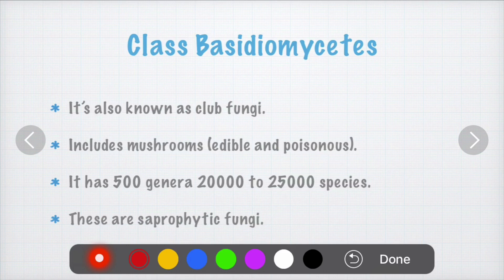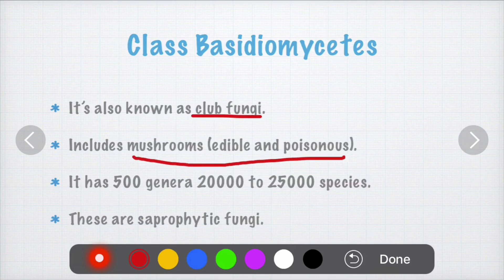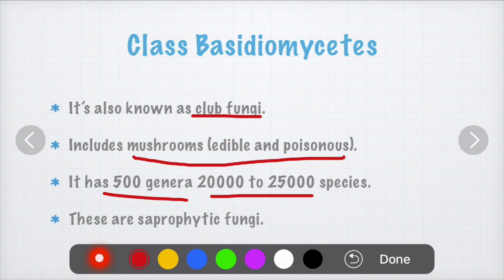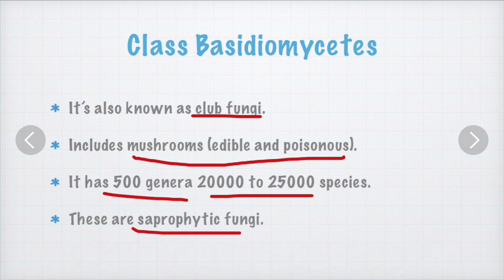Next is class Basidiomycetes, also known as club fungi — I'll explain why in a later slide. Class Basidiomycetes includes mushrooms, both edible and poisonous types. It has 500 genera and 20,000 to 25,000 species. They are saprophytic, getting nutrition from dead or decaying matter.